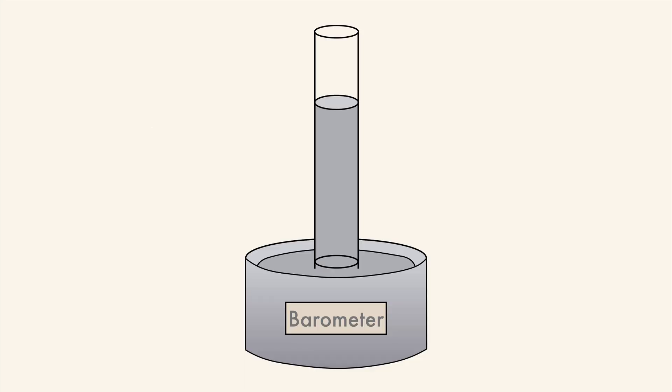We can measure atmospheric pressure using a barometer. This particular type is filled with mercury — don't drink it or breathe it, it's actually really dangerous. Mercury is the densest room-temperature liquid, which makes it possible for the barometer to be less than 1 meter high. If it were made with water, it would need to be over 11 meters high, about 34 feet, which is also really inconvenient. So a mercury barometer can be much smaller, about 30 inches high.